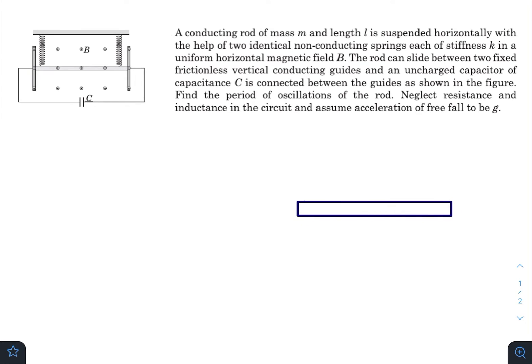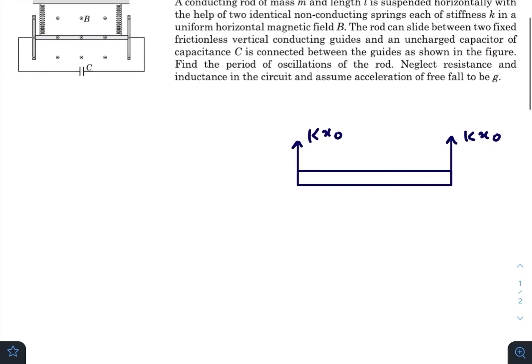Let us first draw the situation when the rod is in equilibrium state. Both the springs are in stretched condition. Let that stretching for each spring be x_naught. Gravity is acting downwards. In equilibrium condition we can write 2k x_naught equals mg. This will be our first equation.